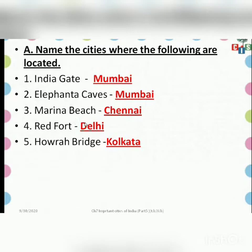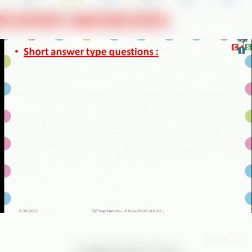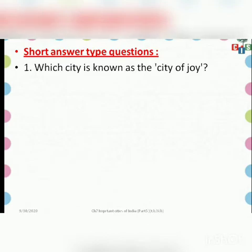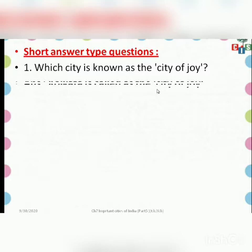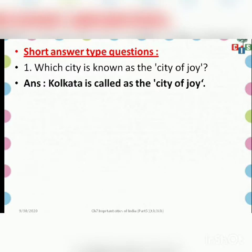Children, these things you have to write in the students' book itself, not in the notebook. Now we'll go ahead with the short answer type questions. The first short question is: which city is known as the City of Joy? The answer is Kolkata — yes, Kolkata is called the City of Joy.